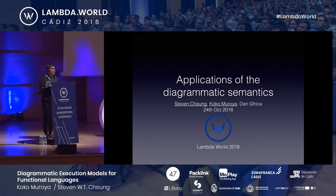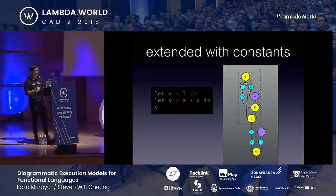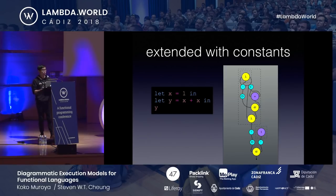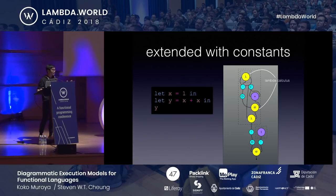So far you've seen what the diagrammatic semantics is and how it actually works. In the second half I'm going to talk about applications of the diagrammatic semantics. Before that I'll extend the untyped lambda calculus with some constants. On the right-hand side is a simple diagram for the program. The purple nodes correspond to constants and operations; everything else is as Coco described.